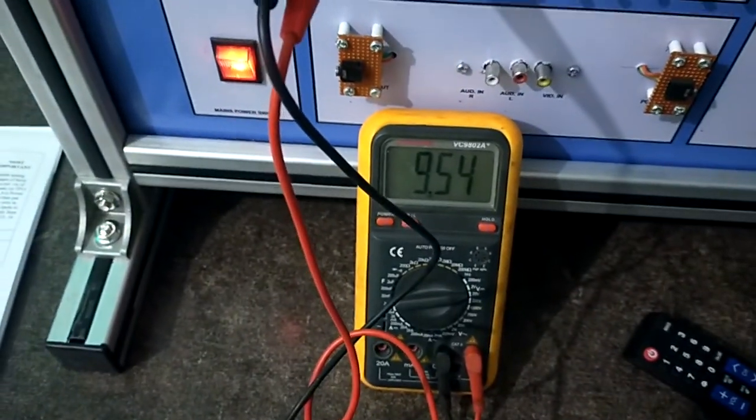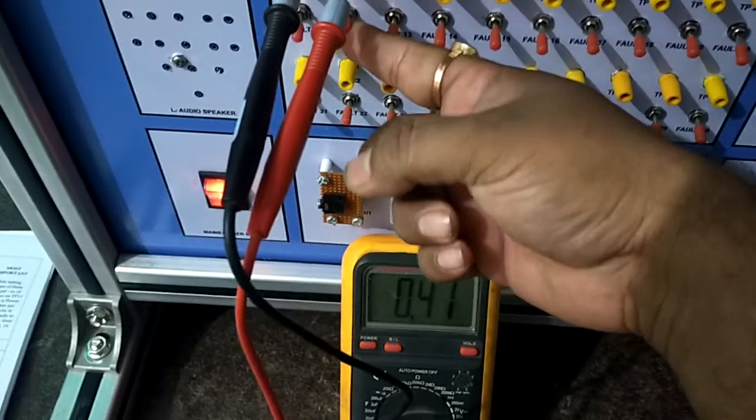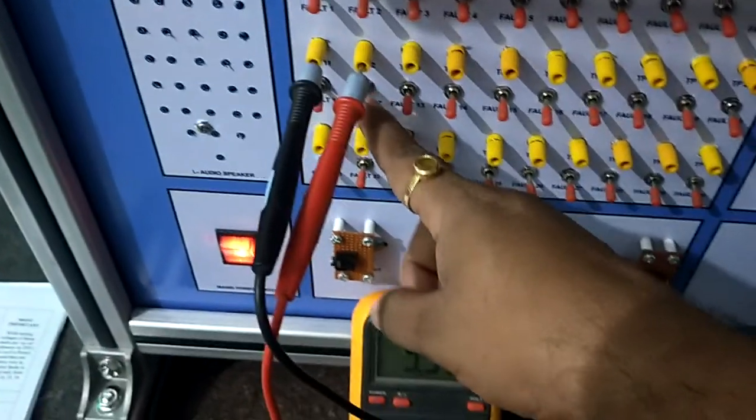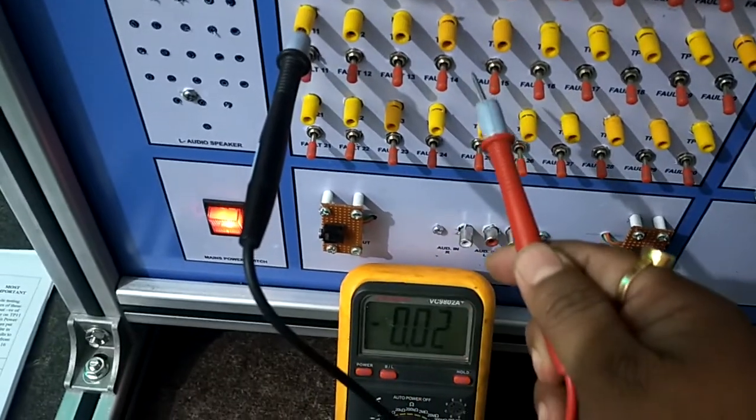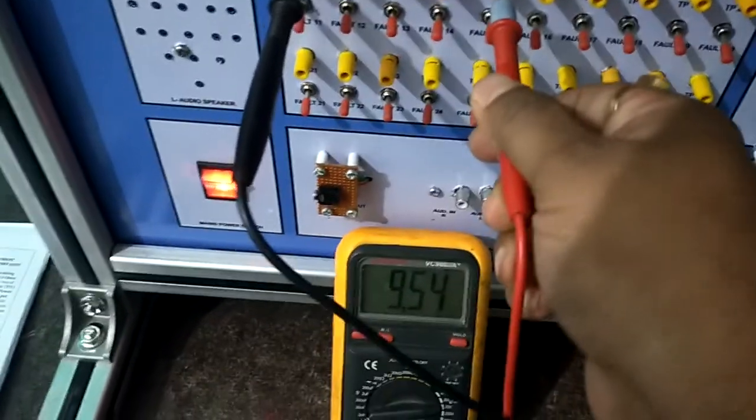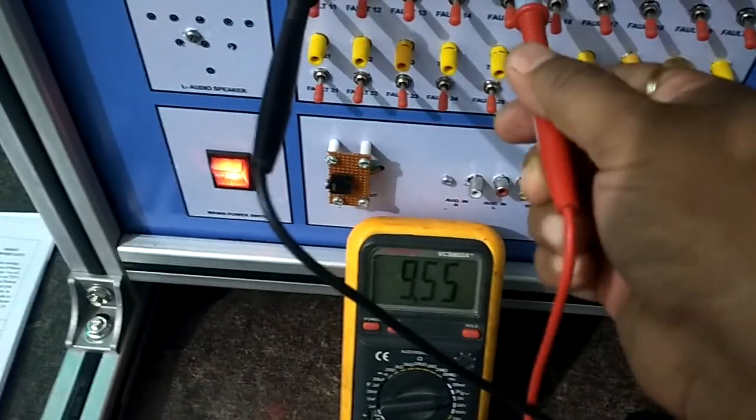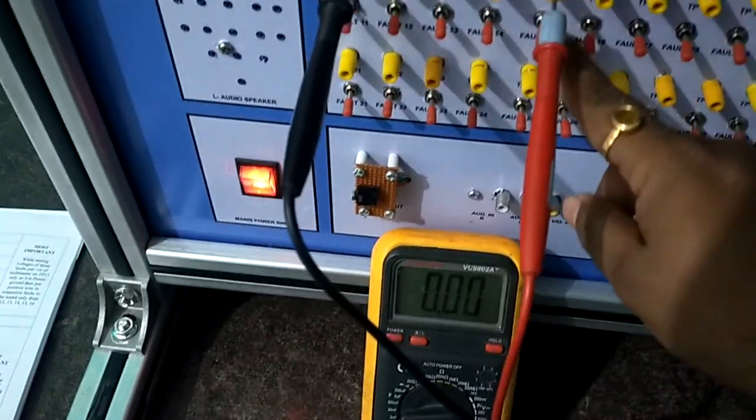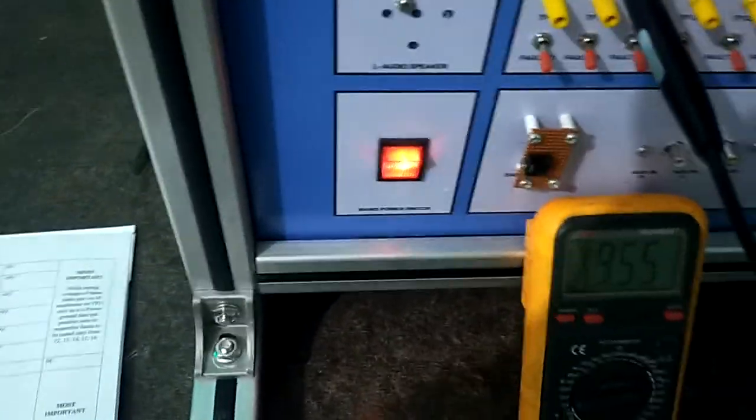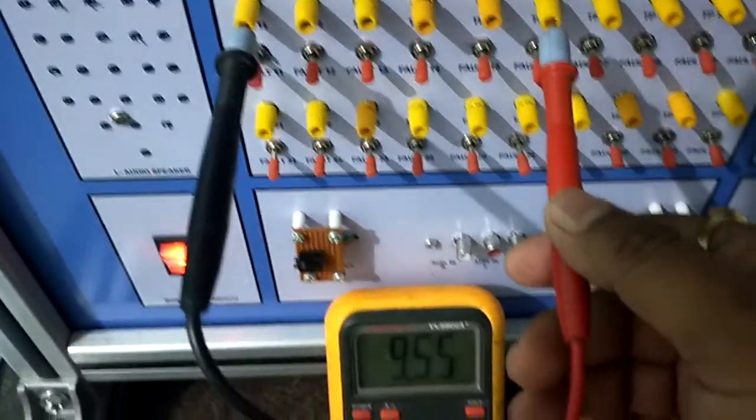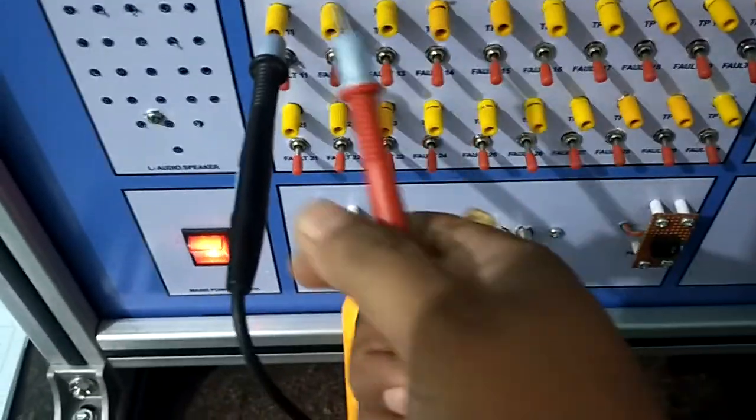Again we have to check the voltages over here. See, at pin number 12 it is coming 9.5. I switch off this and it goes to 0. Up to pin number 15 this would be the same. Up to pin 16 this would be the same. Same 9.5 will come.